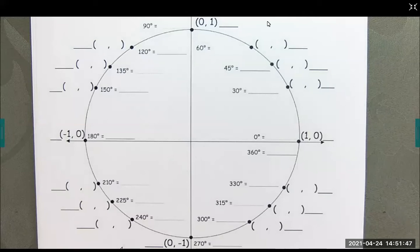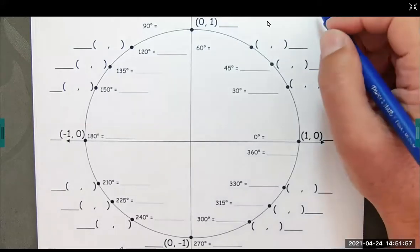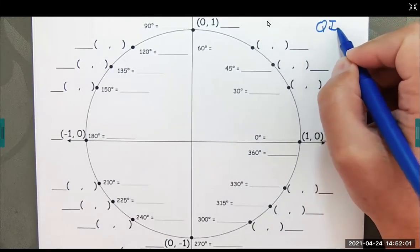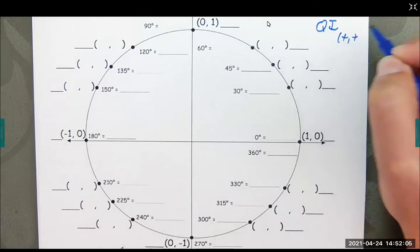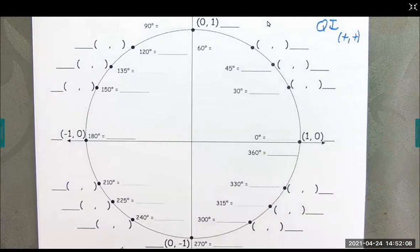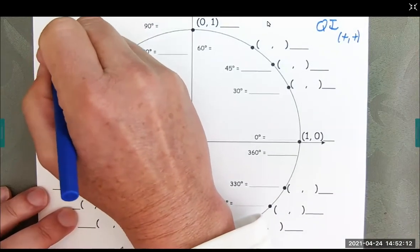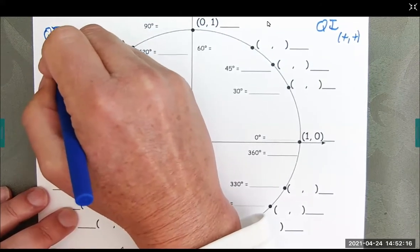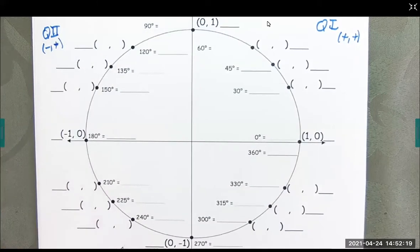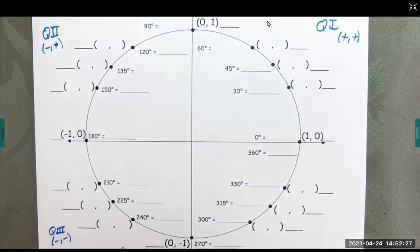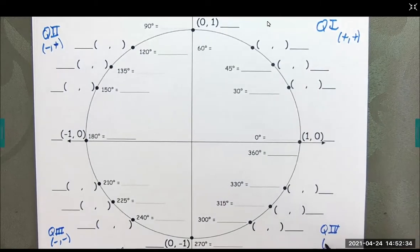Welcome. This recording is CC BY-NC. This is a special recording just for building a unit circle from scratch. We're going to start by recalling that in quadrant one, both X and Y are positive. In quadrant two, X is negative and Y is positive. In quadrant three, both X and Y are negative. In quadrant four, X is positive and Y is negative. We will need that as we look at this.